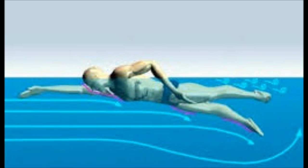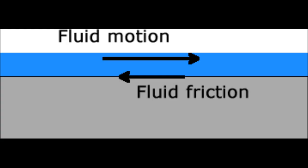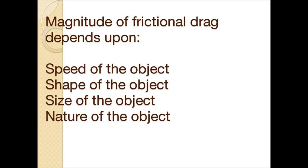Typical examples of drag forces are the air resistance force experienced by a car or an aeroplane when they move at high speeds, and the water resistance force experienced by a speed boat moving rapidly in the sea. The magnitude of frictional force or drag exerted by a fluid on an object depends on four factors: the speed of the object, the shape of the object, the size of the object, and the nature or viscosity of the fluid.